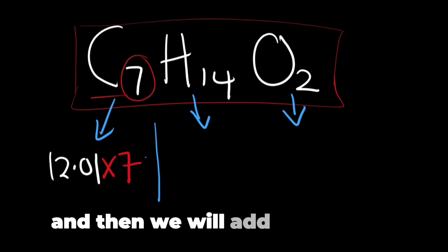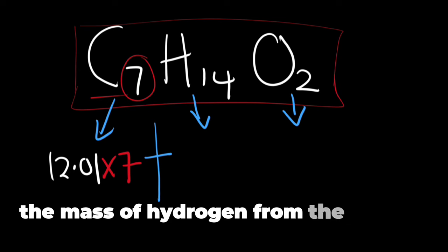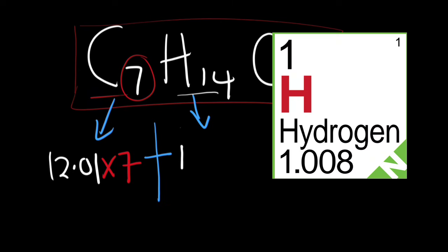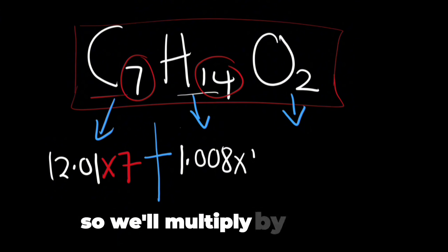And then we will add this value by the mass of hydrogen from the periodic table is 1.008. But we have here 14 of hydrogen so we will multiply by 14.